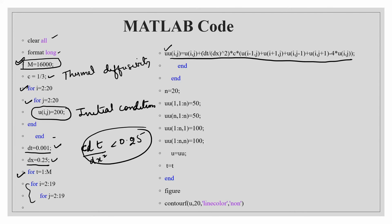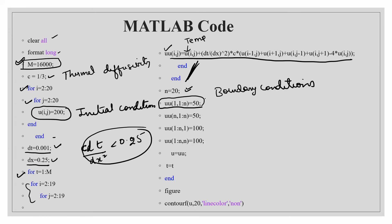Inside the loop, I implement the FTCS scheme exactly as derived. u is the temperature variable. The scheme computes the temperature at the next time step as the current temperature at (i,j) plus the diffusivity term using the central difference stencil. After the inner loops, I set the boundary values for n=20: upper, lower, left, and right boundaries are assigned their respective temperatures.